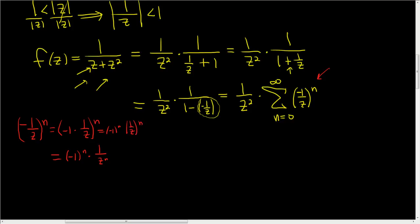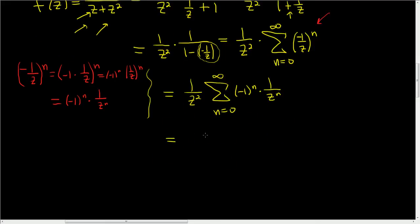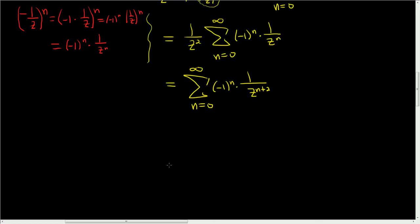Okay, so let's go ahead and rewrite what we have. So this is equal to 1 over z squared, the infinite sum, as n runs from 0 to infinity, and here we have negative 1 to the n times 1 over z to the n. Now we can distribute the z squared, so we end up with the infinite sum as n runs from 0 to infinity of negative 1 to the n times 1 over z to the n plus 2, to the n plus 2. I suppose we could stop here, but let's keep going and clean it up a little bit.